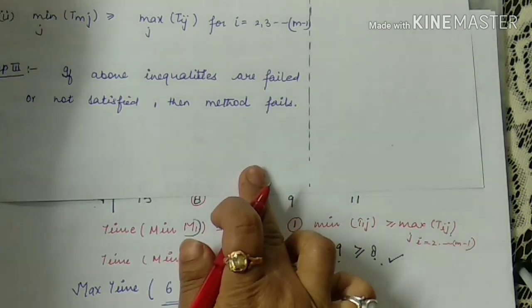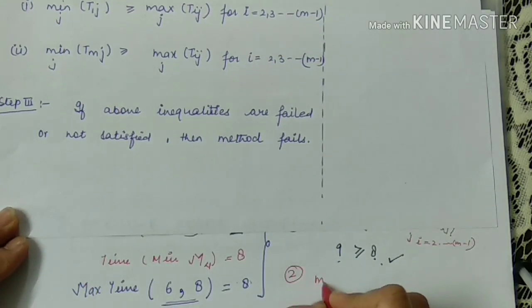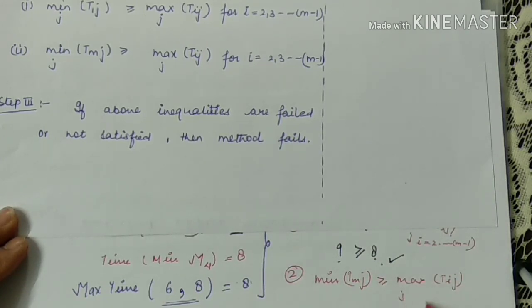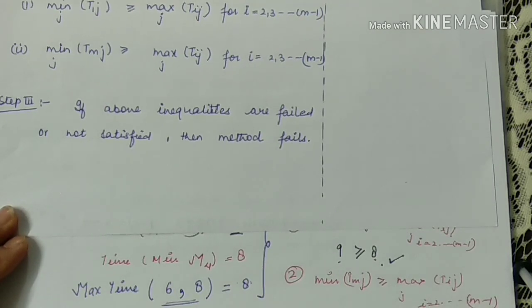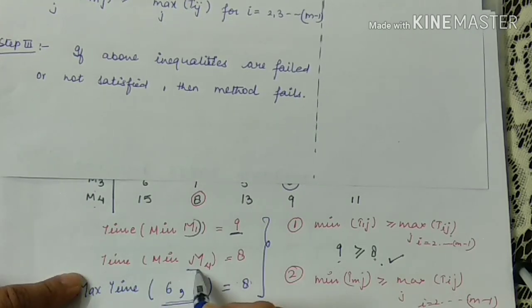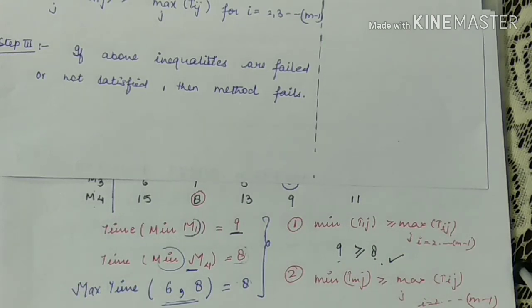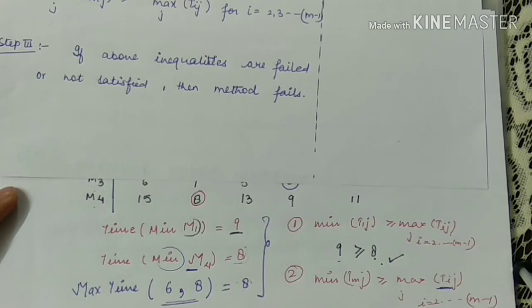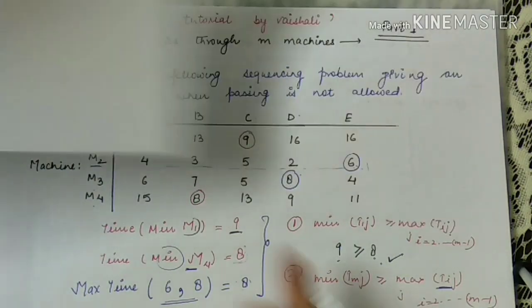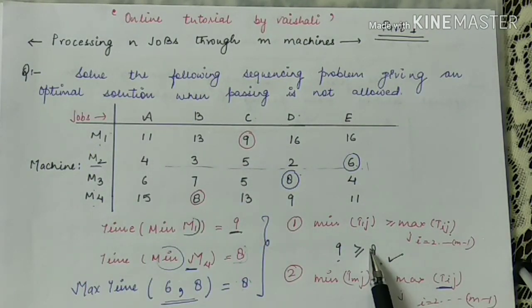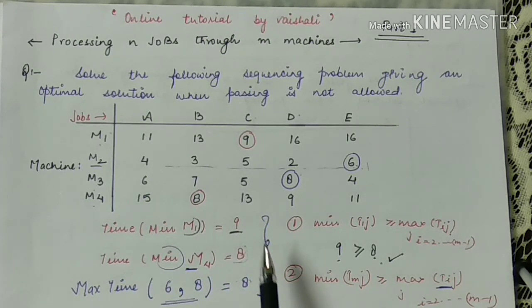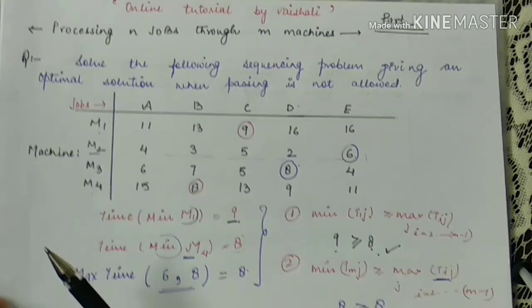The second condition: minimum of TMj (last machine) must be greater than or equal to the maximum of Tij for intermediary machines. Minimum time on M4 is 8 hours. This is greater than or equal to 8 — the intermediary maximum. Yes, 8 equals 8, so this condition is also satisfied. Both inequalities are satisfied in our given question.